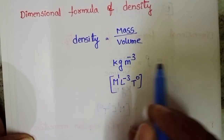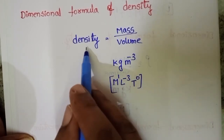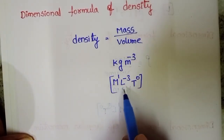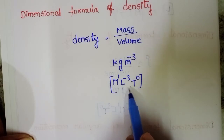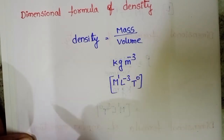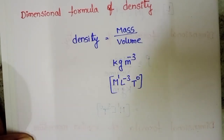Why T power 0? Because there is no time component in density. So the dimensional formula of density is M power 1, L power minus 3, T power 0.